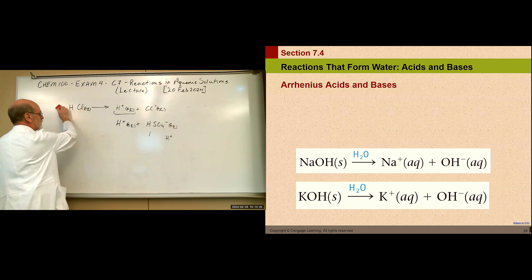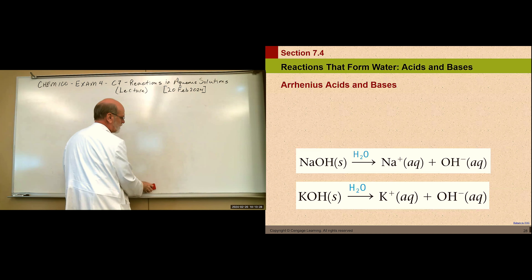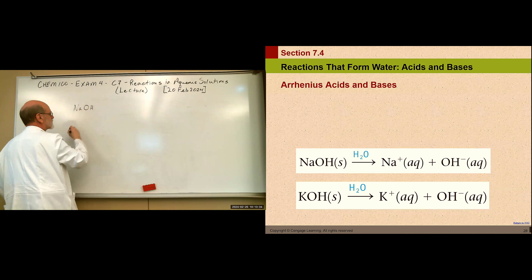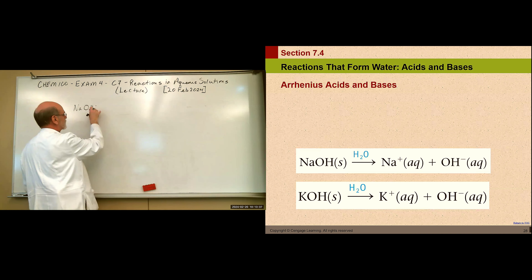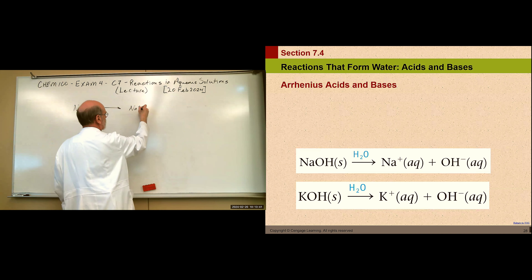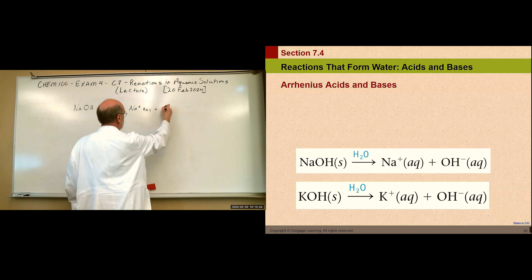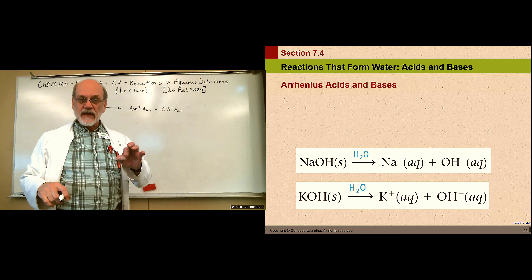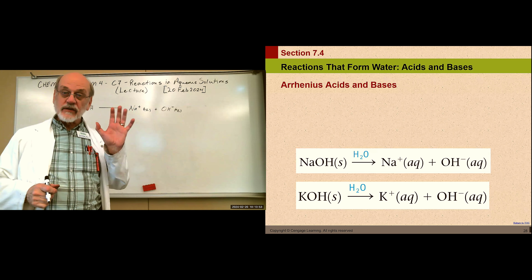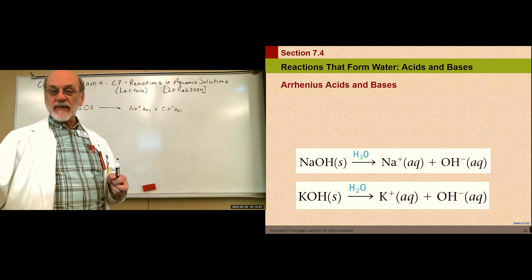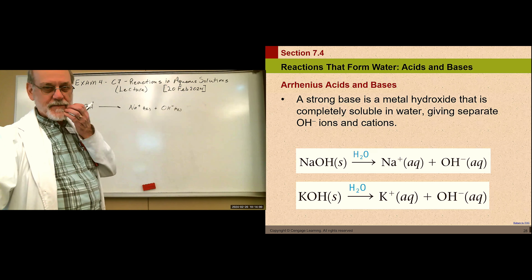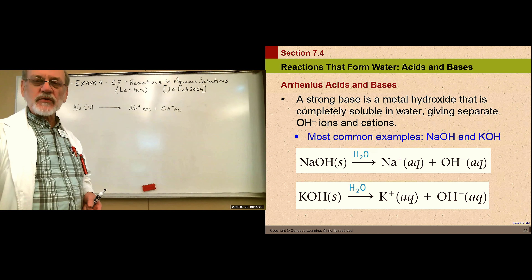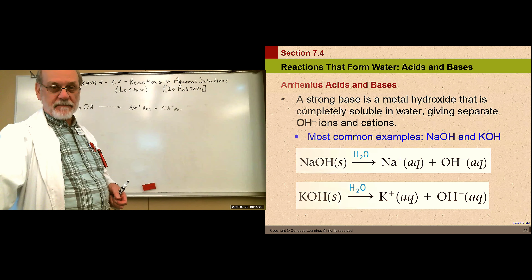The Arrhenius base has a hydroxyl ion within its structure. For example, sodium hydroxide (NaOH) in aqueous solution produces sodium ions and hydroxyl ions — it is a strong base, meaning dissolution is complete. Potassium hydroxide is similar. The most common strong bases are metal hydroxides formed from alkali metals and alkaline earth metals combined with hydroxyl ions.